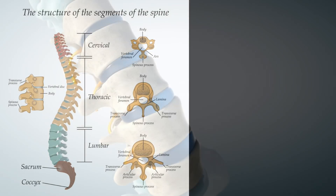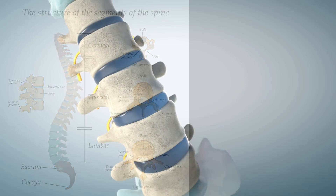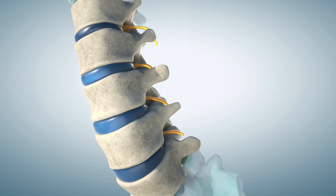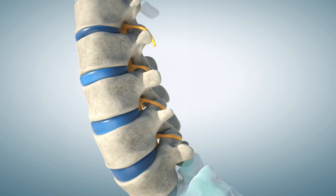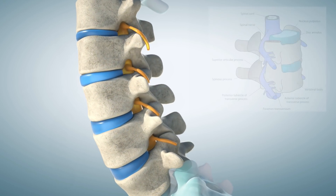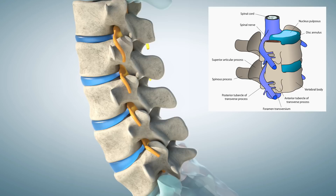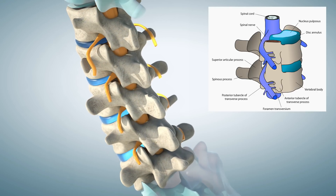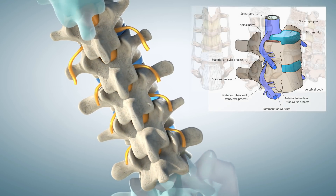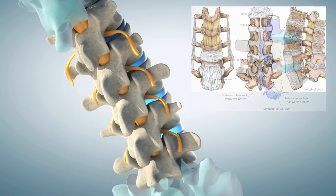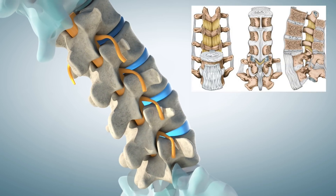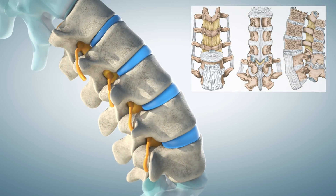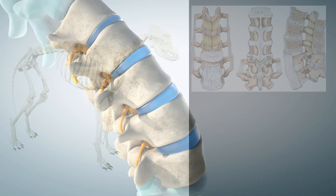In between these vertebrae are discs. These discs are like rubber shock absorbers with a leather outer layer. The center is called the nucleus pulposus, and the outer layer is called the annulus fibrosus. The leather-like part attaches the vertebrae together and allows the spine to flex and extend.